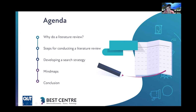We're going to go through why to do a lit review, the steps for conducting one, and how to develop a search strategy — particularly useful if you're trying to publish a systematic or critical literature review, where the literature review might be an output in its own right. I'm going to show you some examples of mind maps that I've done and that my students have done, following on from the earlier session where we showed how to use the visual tool Miro.